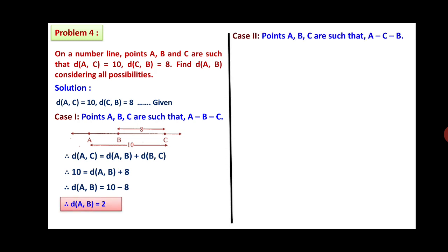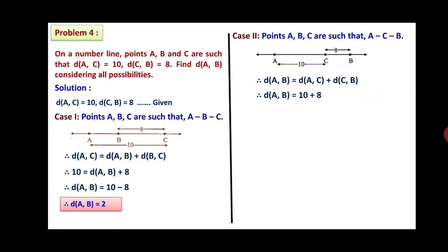Case 2: C is between A and B (betweenness A, C, B). Distance AB equals distance AC plus distance CB. Therefore, distance AB equals 10 plus 8, which is 18. This is also possible.